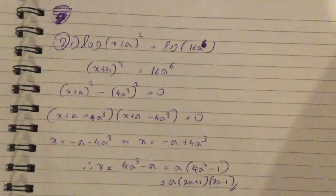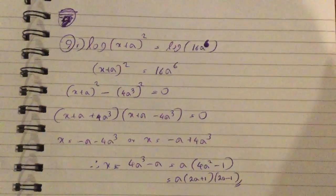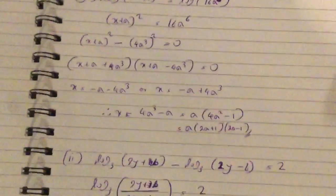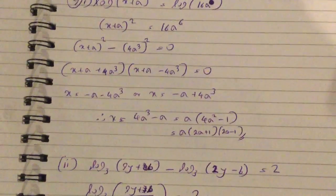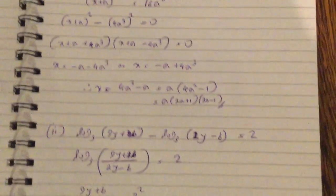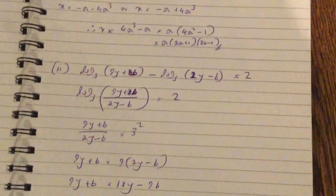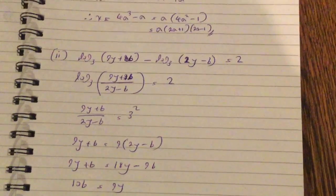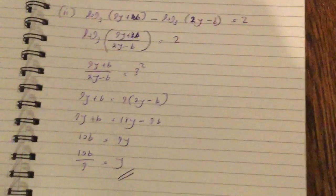Question 9 is a log question. log(x plus a) squared equals log 16a to the 6. Writing x plus a squared equals 16a to the 6 and using difference of squares gives x equals 4a cubed minus a, which is a(4a squared minus 1), factorized as a(2a plus 1)(2a minus 1). For the second part: log base 3 of (9y plus b) minus log base 3 of (2y minus b) equals 2. Combining using the division law and solving gives y equals 10b over 9.